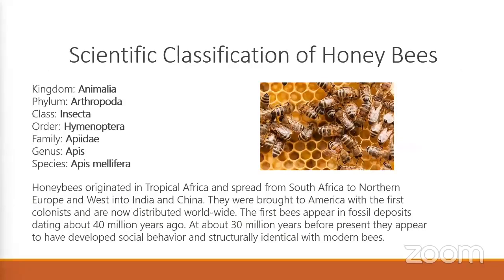So the scientific classification of bees — Trace already covered a little bit about it, but we all know they are insects. They have six legs; that's what identifies insects. Their name is Apis mellifera, which we already covered. Honeybees originated in tropical Africa and then spread from South Africa to northern Europe, west into India and China. They were brought to America with the first colonists and are now distributed completely worldwide.